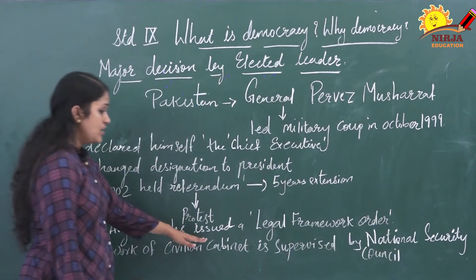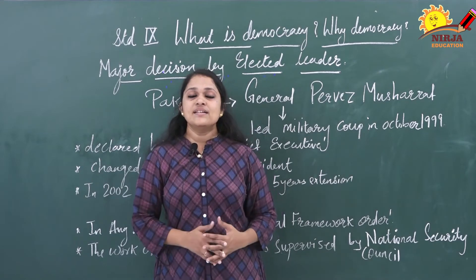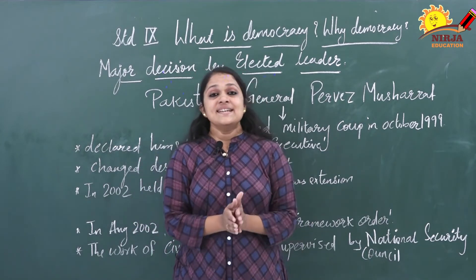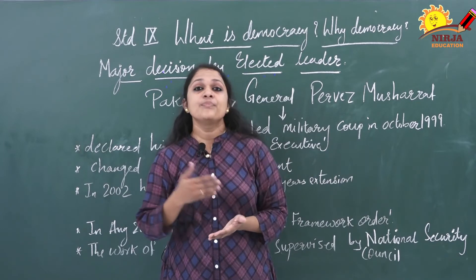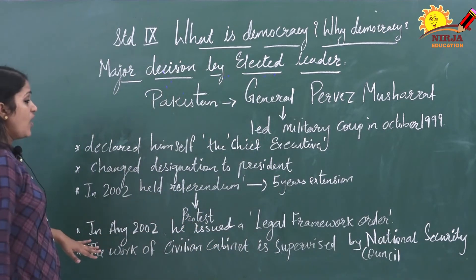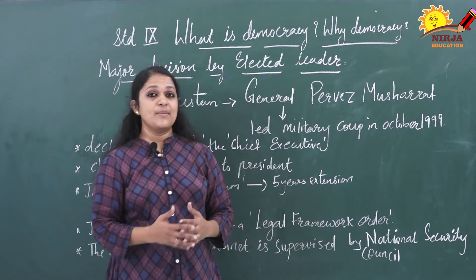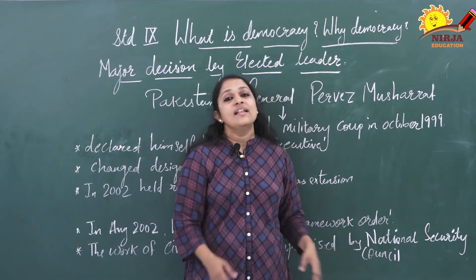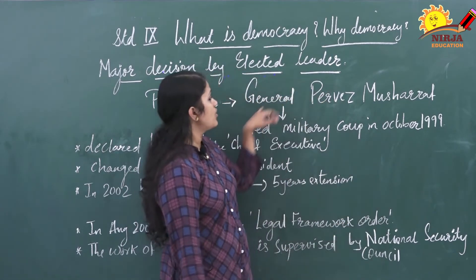In August 2002, he issued a Legal Framework Order and amended the constitution of Pakistan — meaning he made changes in the constitution. According to this, the president could dismiss the national and provisional assemblies. The already democratically elected assemblies at national and provisional level were dismissed. Furthermore, the work of the civilian cabinet was supervised by the National Security Council, whose members were military officers only — all under the control of General Pervez Musharraf.